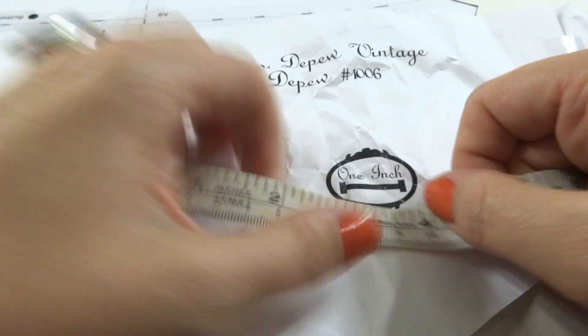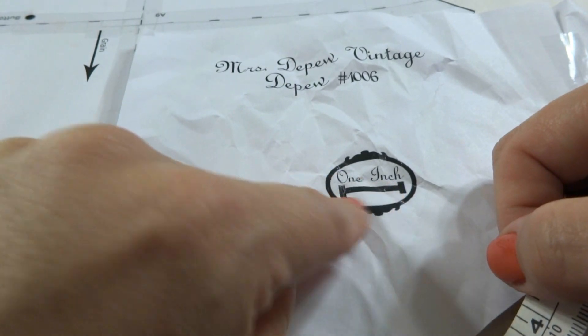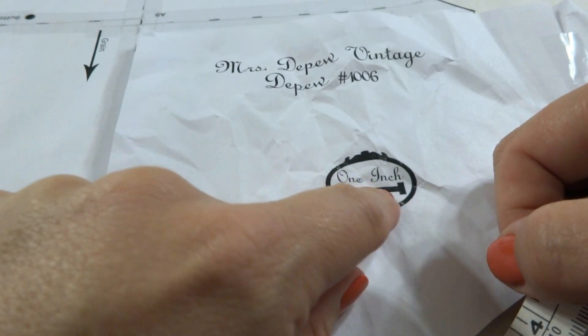If it's anything more or less than an inch, you can either choose to reprint the pattern or choose to adjust as you're grading by whatever it is off.